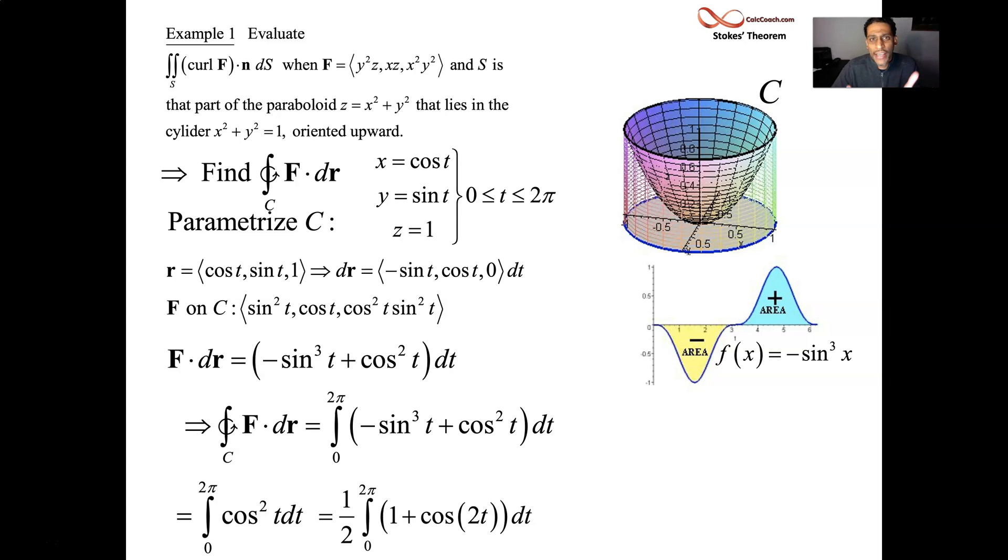But cosine of two t actually does two full periods by the time you get from zero to two pi. And so that's going to zero out as well. You could actually integrate it. I just want you to know these things so you could take advantage of them whenever they come up. And so you're just integrating one half from zero to two pi. The result of this integral is pi.